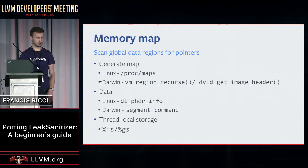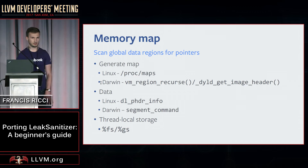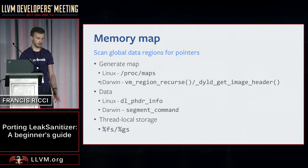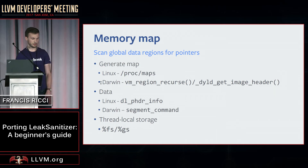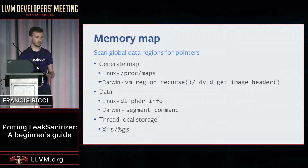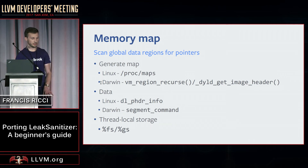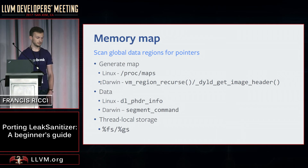The next step is to generate a memory map. On Linux and FreeBSD we can just parse the proc maps file. On Darwin we don't have a proc maps file, so we use the dynamic loader image APIs in conjunction with the VM region recursive system call. Once we have a memory map, we determine which sections contain static data and global variables, and by default ignore pointers to the heap stored in those sections as well.